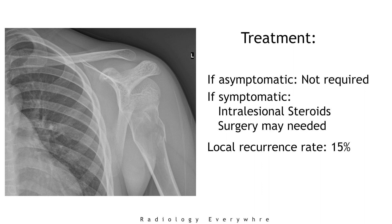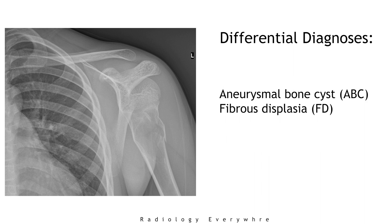The local recurrence rate is nearly 15%. The major differential diagnoses of unicameral bone cysts are aneurysmal bone cysts and fibrous dysplasia.